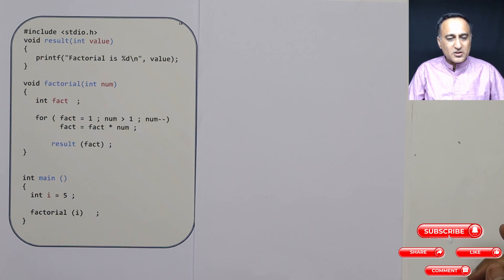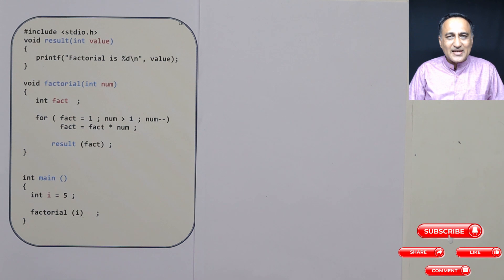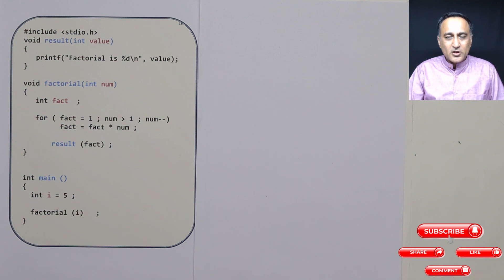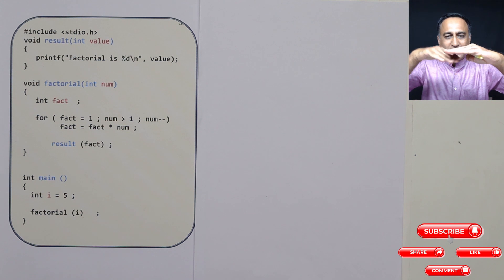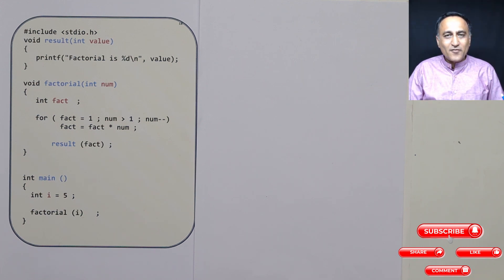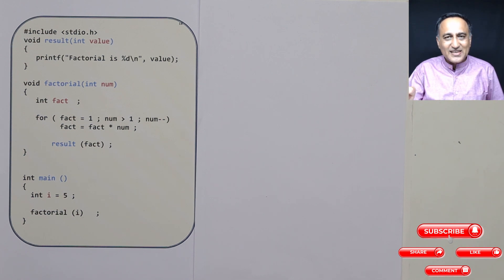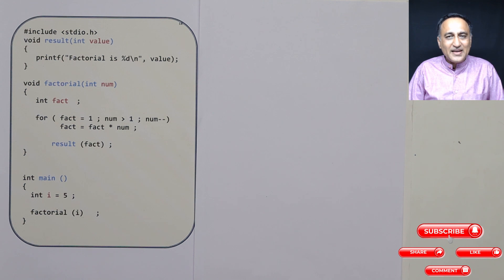To answer all these questions, we use a data structure called a stack. Think of a stack as a box where you can put books or plates one on top of the other. You keep putting books one on top of the other, and when you remove a book, you remove from the top of the pile. The book which went in last is removed first. This idea is used in maintaining the stack frame or activation record in the stack for each function.